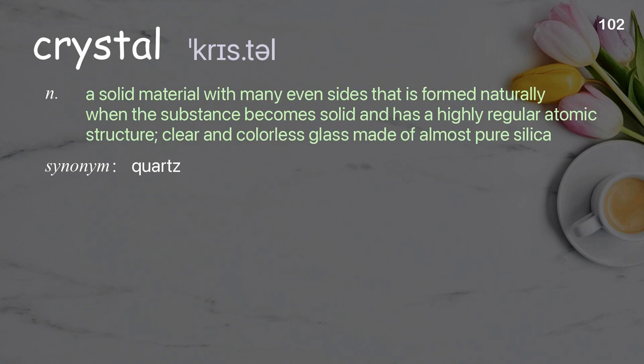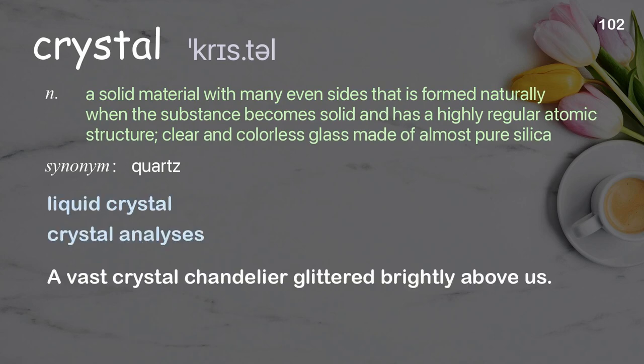Crystal: A solid material with many even sides that is formed naturally when the substance becomes solid and has a highly regular atomic structure; also clear and colorless glass made of almost pure silica. Examples: Liquid crystal. Crystal analyses. A vast crystal chandelier glittered brightly above us.